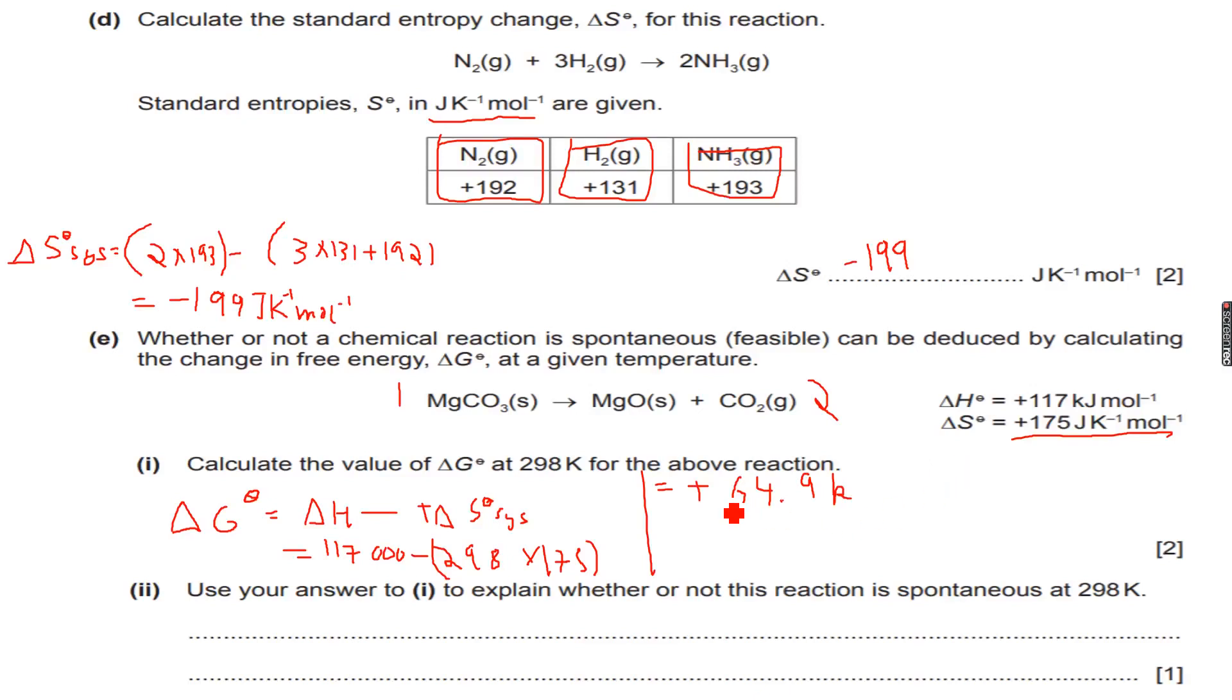The sign is very important because it helps us determine the feasibility of the reaction. So, plus 64.9 kilojoule per mole is the Gibbs free energy change.